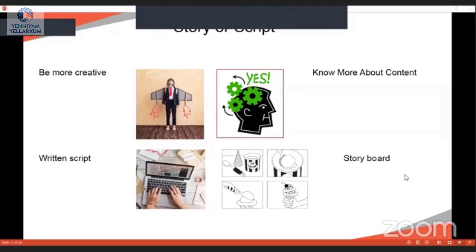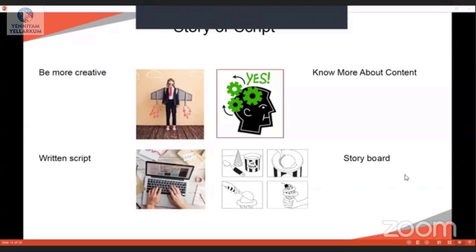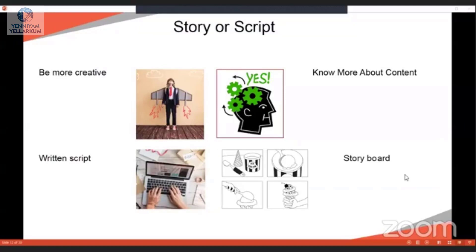The next point is the storyboard. A storyboard is used when you don't know how to structure a video — you edit the content and script using it. For example, in a storyboard there are 4 images: first there is an ice cream, then an ice cream scoop, and then a wafer. These images represent the sequence of the story.